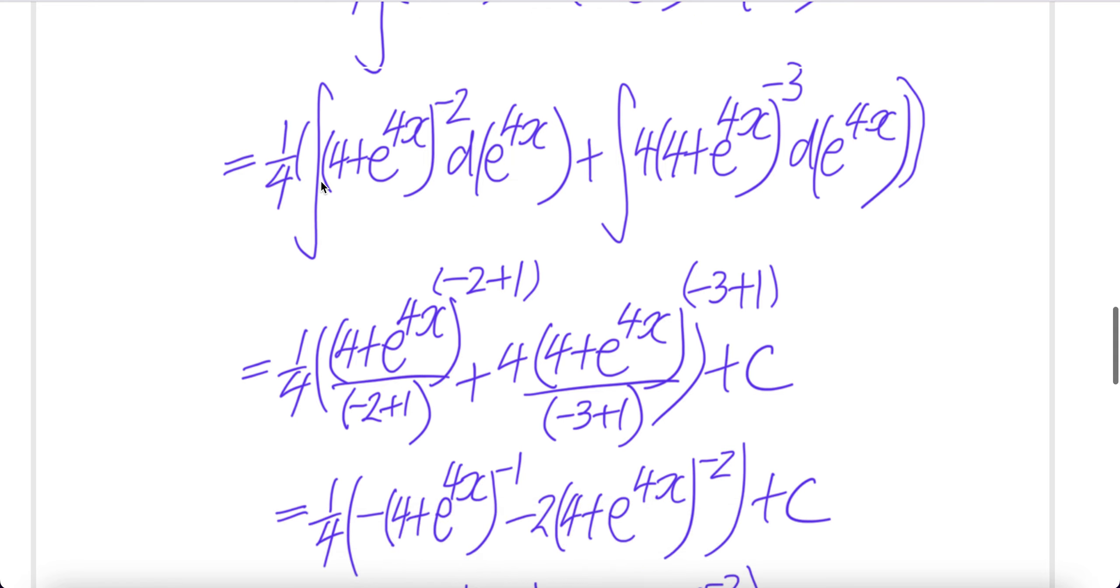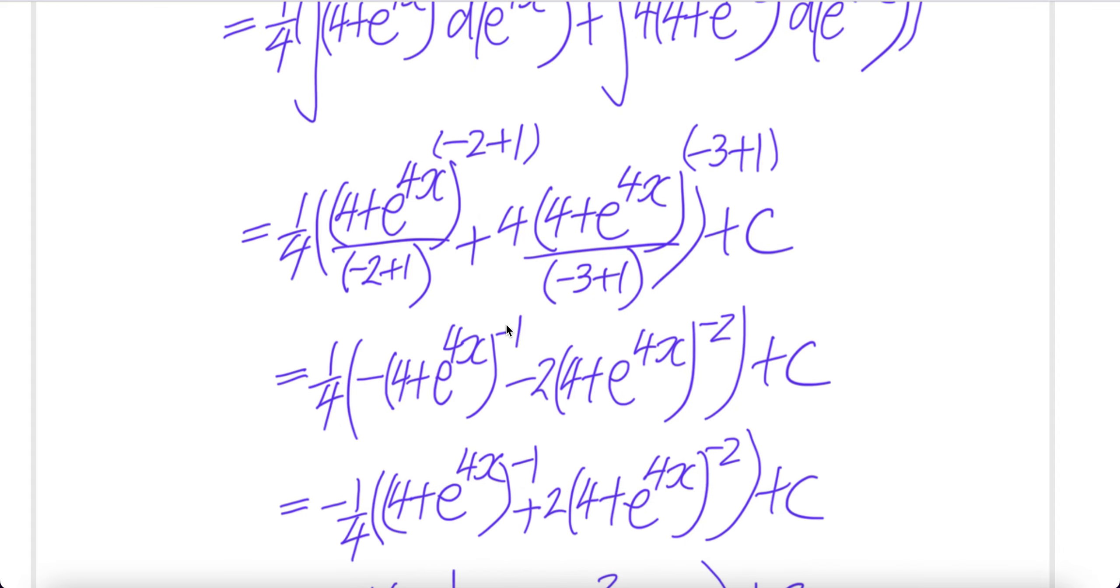So basically the integral of this is 4 plus e to the power of 4x, negative 2 plus 1 over the same exponent. Here 4 out, you get negative 3 plus 1 over the same exponent down here. Change it to negative. Minus 2 plus 1 is minus 1 here. Minus 1 here. You get this.